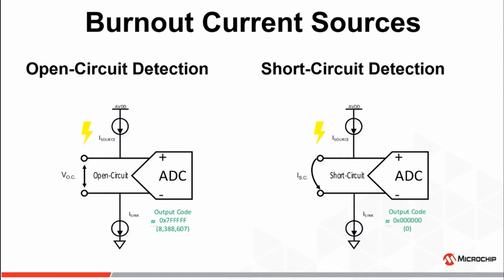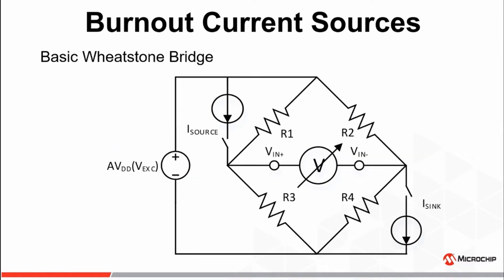As we've shown here, detection of open and/or short circuit conditions of floating sensors such as thermocouples can be fairly trivial. However, what happens when the connected sensor is not a floating sensor and requires an excitation voltage for proper operation? A basic example of a sensor which requires an external excitation voltage is that of a strain gauge load cell, which is commonly used in weight scale applications and utilizes a balanced Wheatstone bridge configuration where all resistors are of equal value. For strain gauges, the change in output voltage VIN-plus minus VIN-minus as a result of tension or strain of the load cell is usually very small, typically in the range of 1 millivolt per volt of excitation.